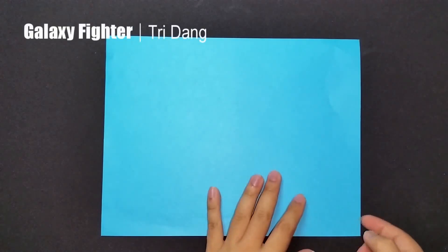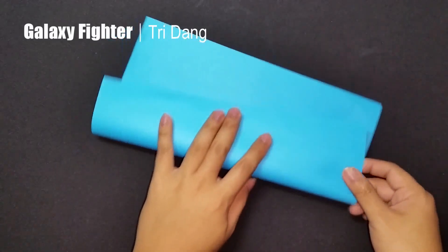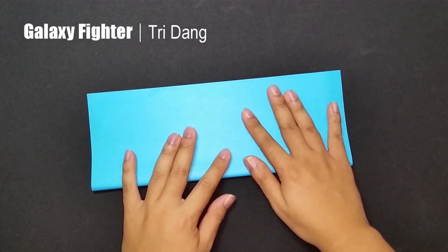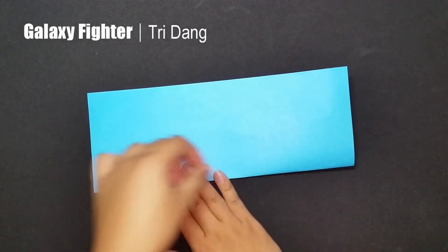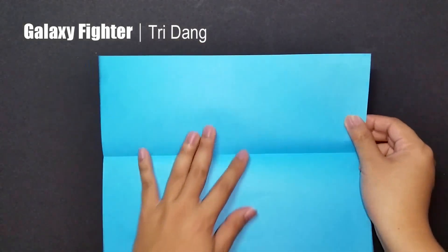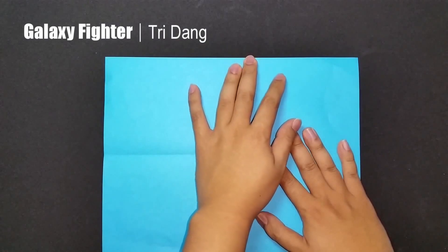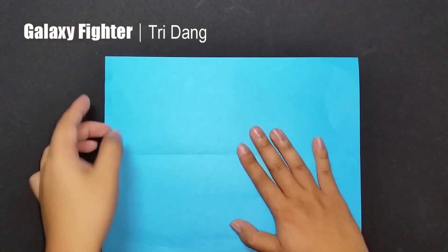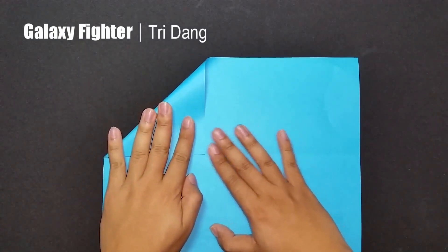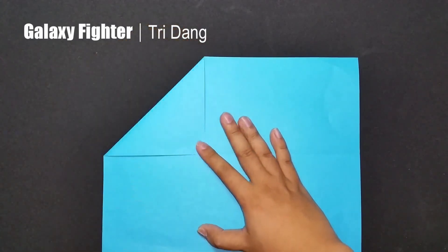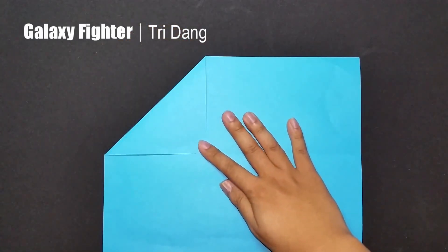First step, I will fold the paper in half horizontally. Unfold the paper. Now, I will start from the left side first. I fold it straight to the center crease. Repeat the same fold for the other side.